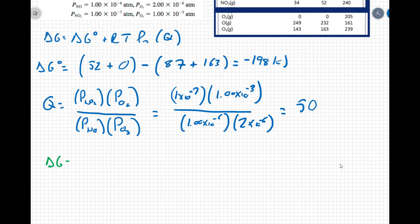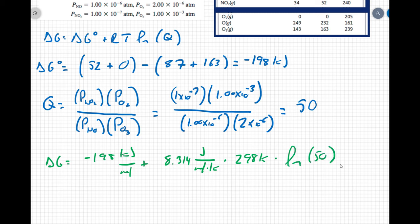ΔG equals ΔG°, which is negative 198 kilojoules, that's really kilojoules per mole, plus R, which is 8.314 joules per mole times Kelvin, times 298 Kelvin, times the ln of 50. So we have to be mindful of units here. My Kelvin are going to cancel out Kelvin, but I have kilojoules here and joules here.